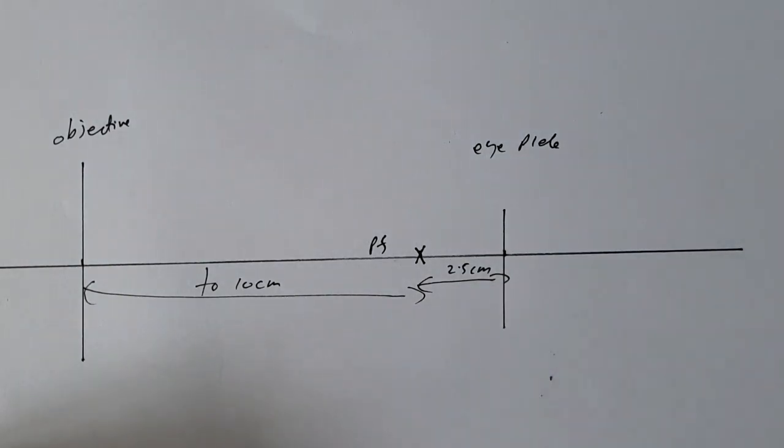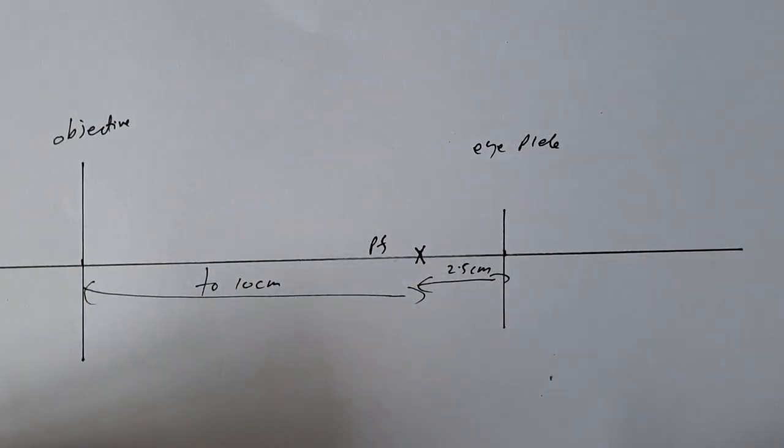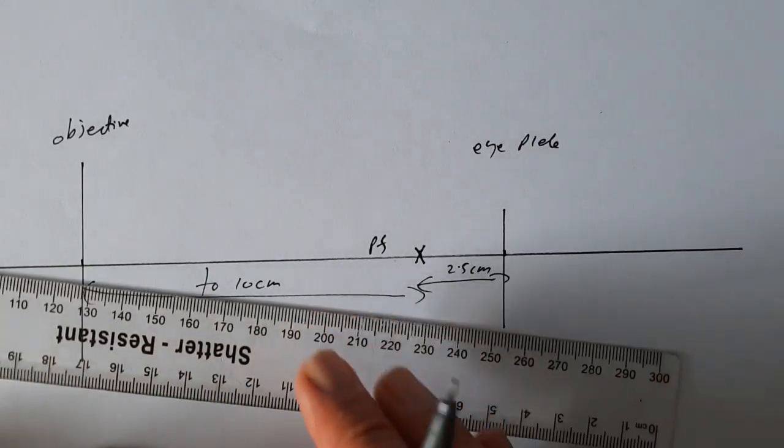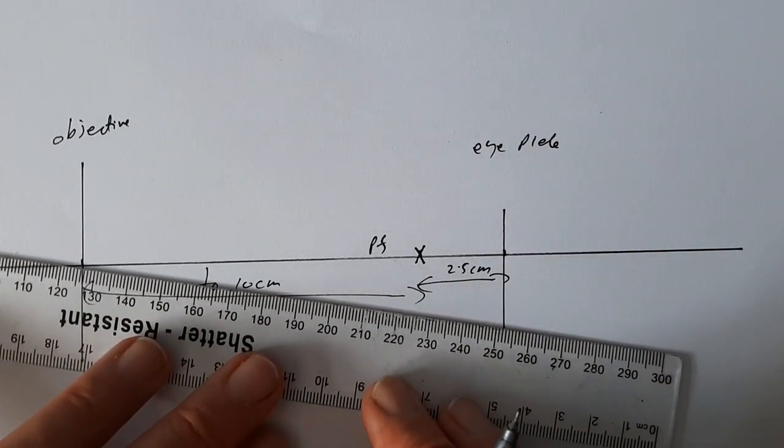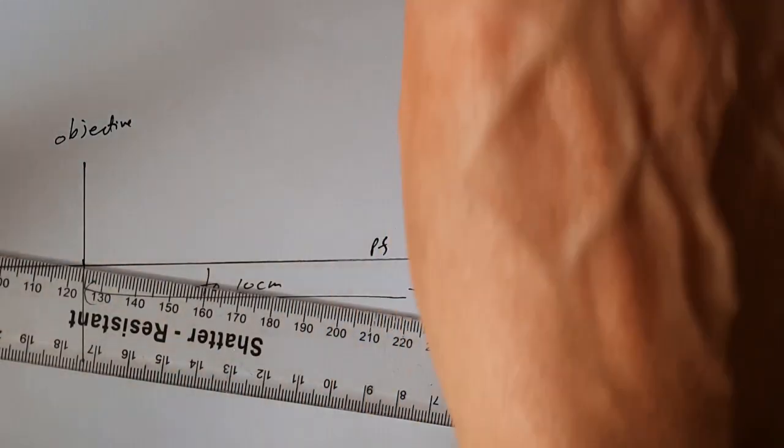What I haven't done this time is put a principal focus to the left of the objective. Often there isn't space to do that, and that's probably what this video is about really. So as ever, we start by drawing our easiest ray. I'm just going to swap color to make it really clear what's a ray and what's not a ray.